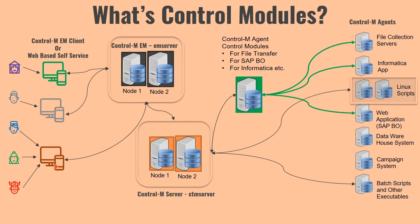As we know, Control M users connect to the Control M EM client, which communicates to the EM server, and EM server communicates to the Control M server. If it is an OS script, batch script, or shell script, Control M server directly communicates to the agent running on those servers to process the job execution request. However, if you want to execute a job running on Informatica, you need to have control modules for Informatica.